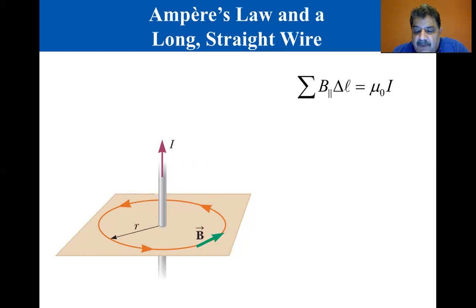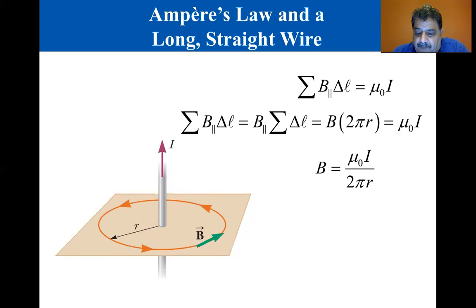Notice that B parallel can be removed from the sum because it has the same value B for each element on the circle. Our equation then gives us the equation shown here. Let's divide both sides by the circumference, that is 2 pi R. This is the result we expect, the magnetic field due to the current in a long straight wire.